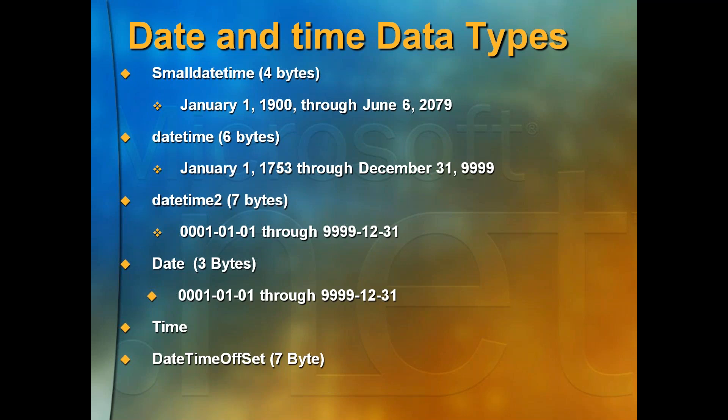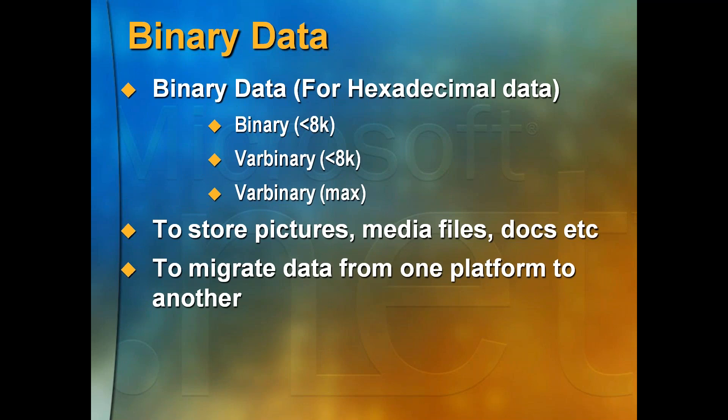The date and time offset stores the timezone information along with the date and time. For example, when PayPal tells you that you'll receive money on the 16th or 17th at GMT +5:30 — that data is written in datetimeoffset format. Tomorrow we will discuss binary data.